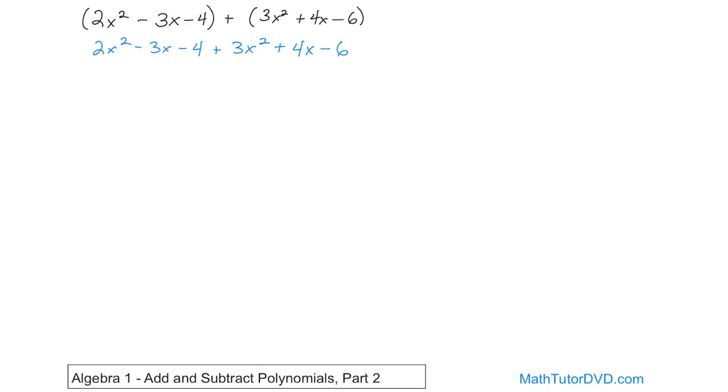So we have a positive 2, positive 3, which means it's going to be positive 5, and you have to carry the variable, and you have to carry the exponent through. So 5x squared.